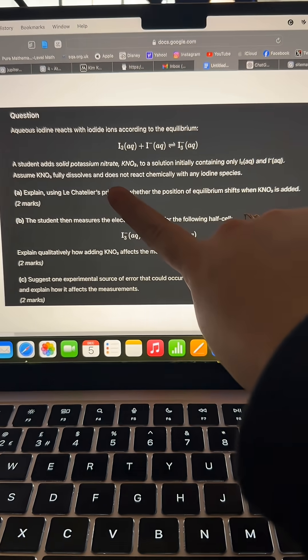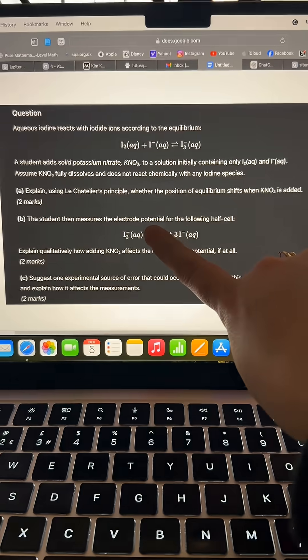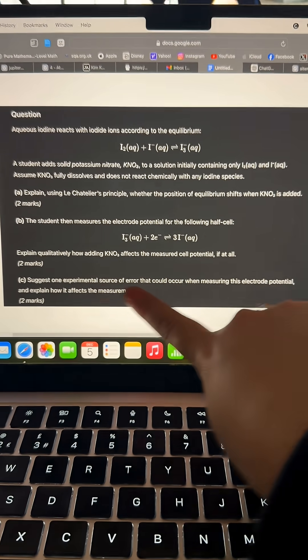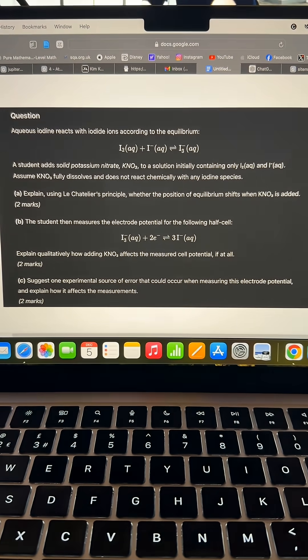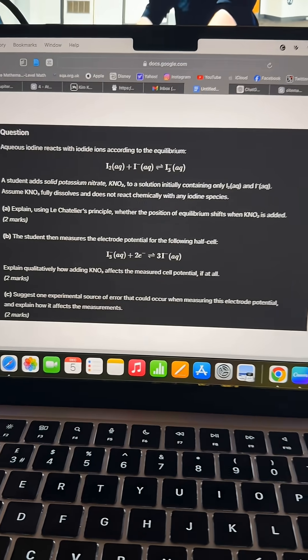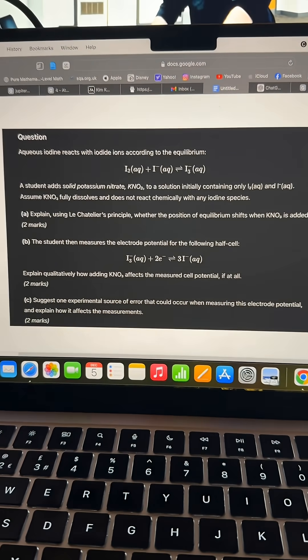First one is Le Chatelier's principle so that must be equilibrium. This is electrode potential so it must be redox. This is experimental source so it's going to be a required practical. Seems very simple but a lot of the times students actually forget to do that just because they're not used to doing it.